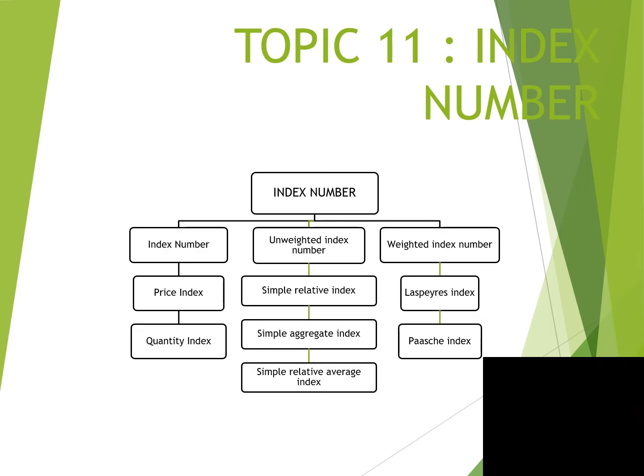Index numbers can be divided into two types. The first one is Price Index and Quantity Index. Under Unweighted Index Numbers, we have: Simple Relative Index, Simple Aggregate Index, and Simple Relative Average Index. Under Weighted Index Numbers, we have the Laspeyres Index and the Paasche Index.